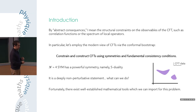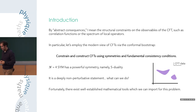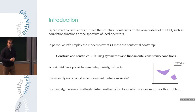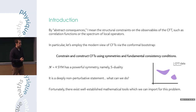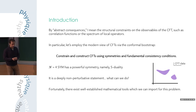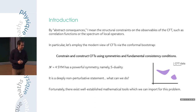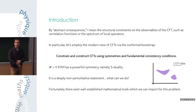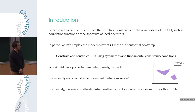The philosophy of today's talk: we know that N=4 has a powerful symmetry, namely S-duality, and we should use it. This is a deeply non-perturbative statement that relates strong and weak coupling. It's not immediately clear what to do or how to use it, but there exist mathematical tools we can import for the problem, and we'll find a lot of mileage in doing so.